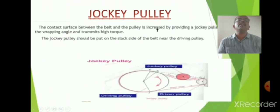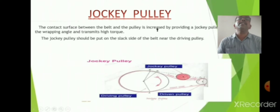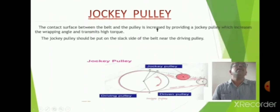Next is the jockey pulley. Two pulleys are shown in the sketch — one is the driver pulley, which is the bigger diameter one, and the other is the driven pulley, the smaller one. The jockey pulley is used when the center distance between both pulleys is large. The upper side is the slack side and the lower side is the tight side. The contact surface between the belt and the pulley is increased by providing a jockey pulley, which increases the wrapping angle and transmits high torque.